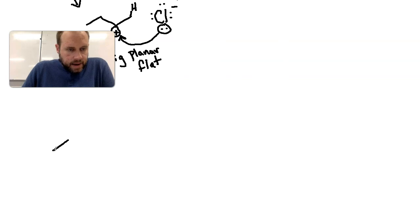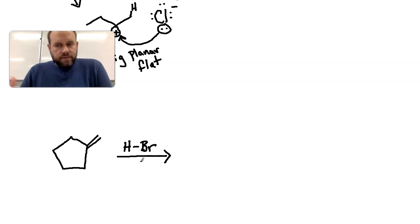If I had a structure that looked like this, a five-membered ring, and then I had the double bond coming off of the ring like this, if I were to expose this to HBr, what would be the product? So take a minute, pause the video, and see if you can figure this out.